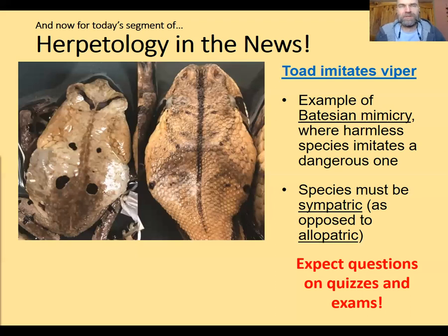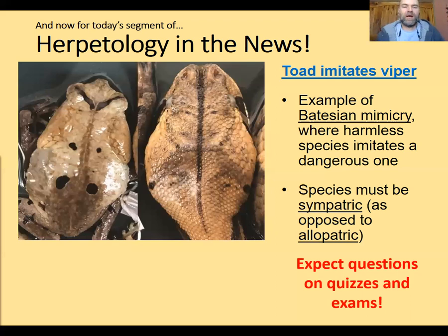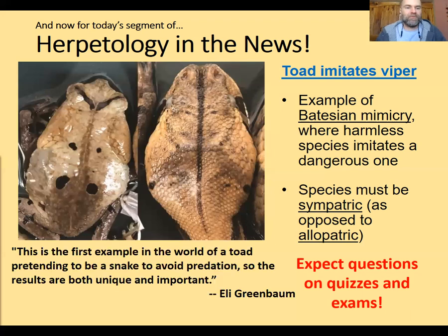There are cool examples of this in salamanders. For example, the red eft stage of the newt Notophthalmus viridescens, which we talked about last week, has a bright red coloration and is toxic to predators. In some areas, the redback salamander's coloration more closely matches the red eft, and the thought is that it's an example of Batesian mimicry — it's advantageous for the harmless redback salamander to look like the red eft so that predators avoid it.